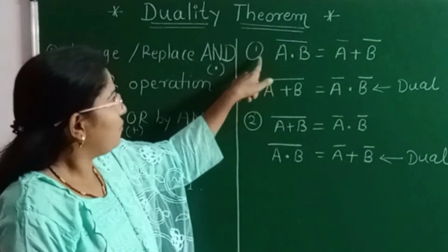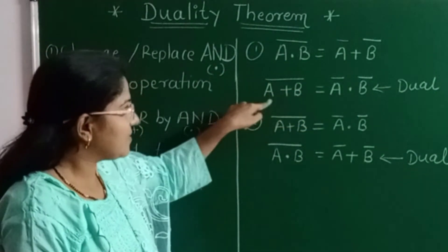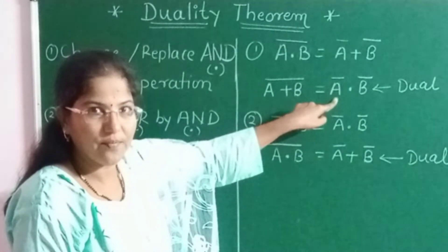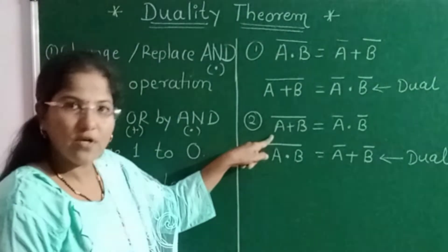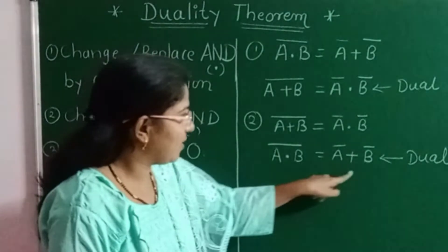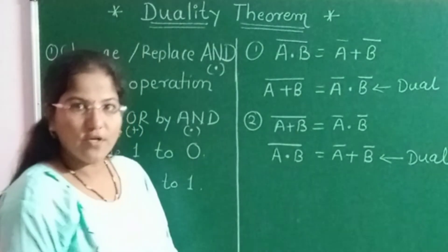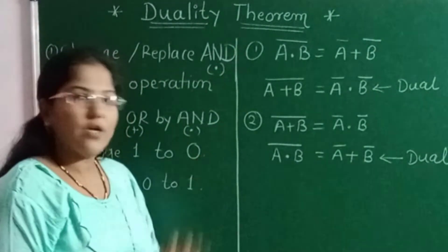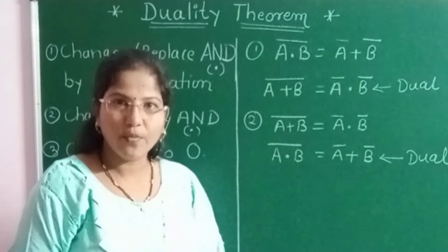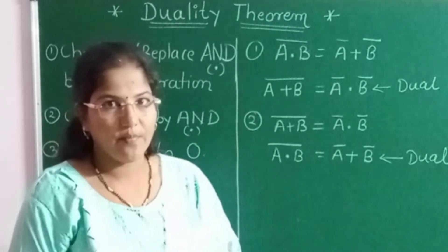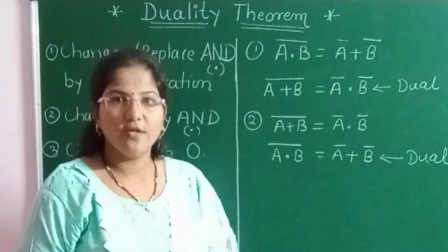You can see that the first given expression is De Morgan's first theorem, and its dual is nothing but De Morgan's second theorem. The second example is De Morgan's second theorem, and its dual is De Morgan's first theorem. So from these two expressions we come to know that when we take the dual of De Morgan's first theorem we get De Morgan's second theorem, and vice versa.